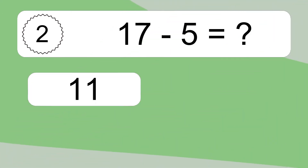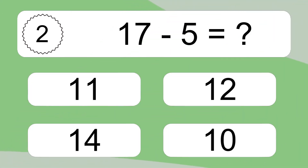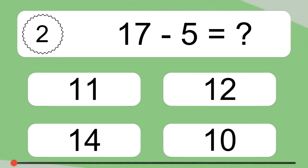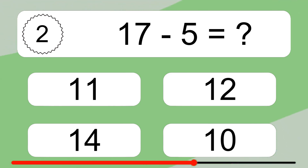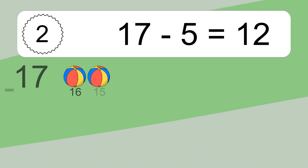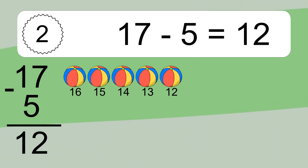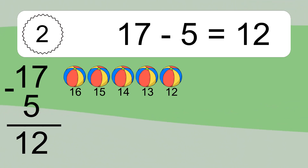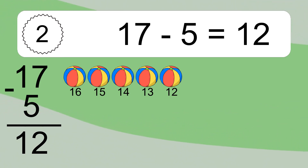17 minus 5 equals what? 17 minus 5 equals 12. Let's count it: 16, 15, 14, 13, 12.